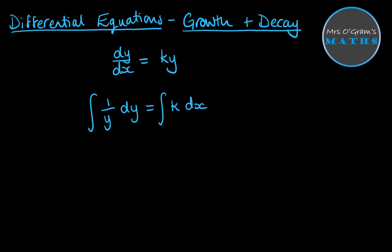Now we can integrate both sides there. We will get the natural log of y on the left-hand side, and kx plus c on the right-hand side.